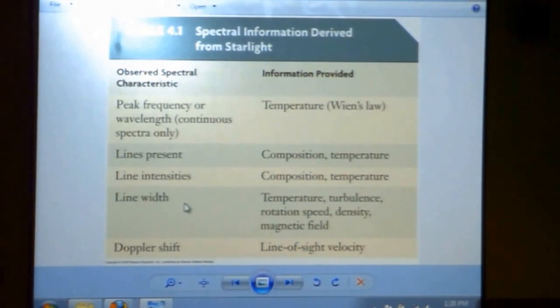Line width can tell us internal temperature as well. Rotational or turbulent motion, that's what I meant by internal motions. We didn't get into it, sometimes you can figure out densities, magnetic field strengths. We'll come back to these in 102. We'll make use of this information. Then there's just the line of sight velocity that we get from the Doppler shift.